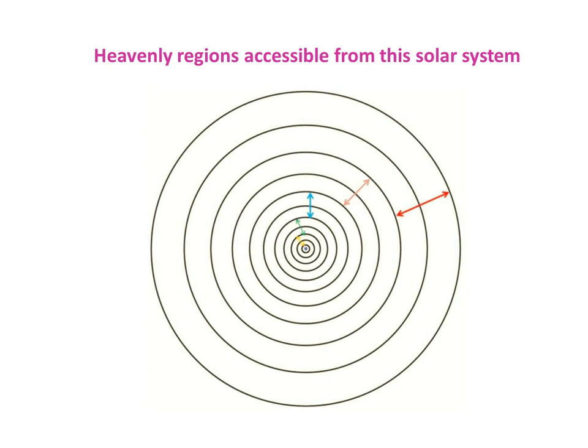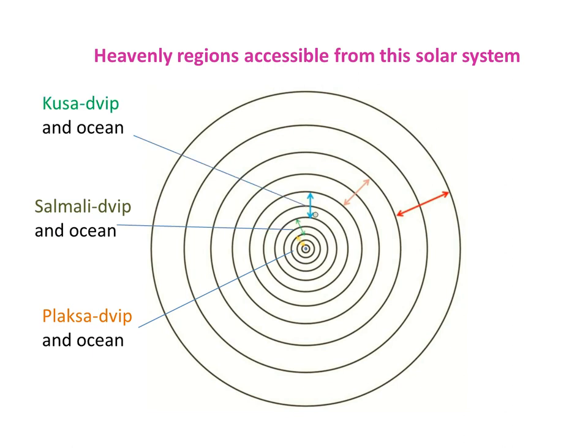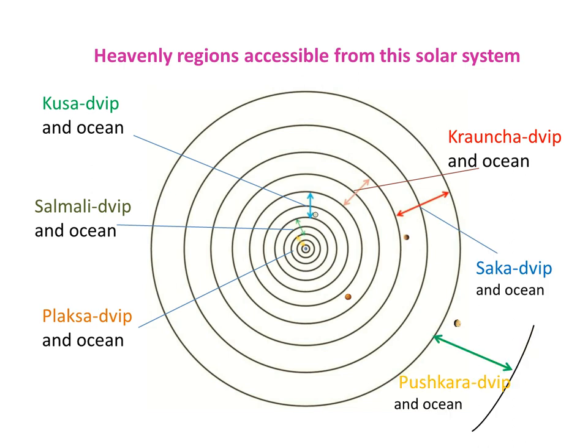Let's learn about those heavenly regions, accessible from this inner part of the solar system. Plaxidreep and its ocean, Somalidreep and its ocean, Kushidreep and its ocean, Kronchidreep and ocean, Sakadreep and surrounding ocean, and Pruskodreep and its surrounding ocean.